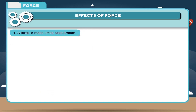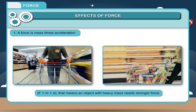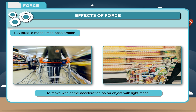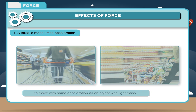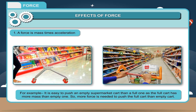A force is mass times acceleration (F = ma). That means an object with a heavy mass needs a stronger force to move with the same acceleration as an object with light mass. For example, it is easier to push an empty supermarket cart than a full one, as the full cart has more mass. So more force is needed to push the full cart than the empty one.